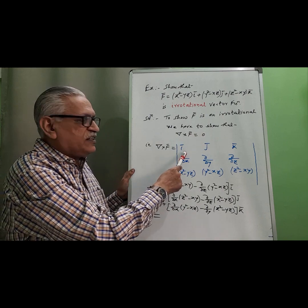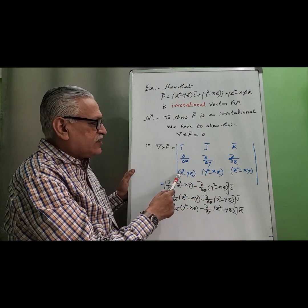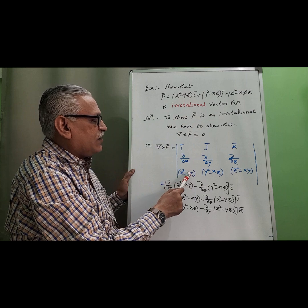As per definition, it is the determinant of i,j,k, second row ∂/∂x, ∂/∂y, ∂/∂z, and third row component of that vector function F̄.